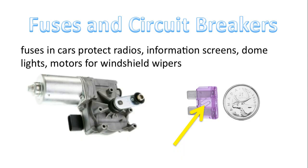Fuses in cars protect radios, information screens, dome lights, and motors for windshield wipers. This diagram here is a typical fuse found in a car — for comparison's sake, it's about the size of a quarter. When too much current flows, this part of the fuse will actually melt.